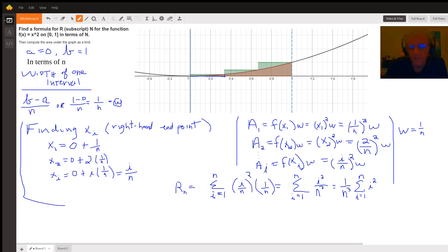Over here we're calculating the area of specific rectangles. To calculate the area of the first rectangle we take f of x sub one, which would be this little distance right here, and multiply it by a width. But the height of that rectangle at x sub one is what you get when you plug x sub one into the function, which is x squared. So x sub one we saw is one over n, one over n squared times w would be a representation for the area of this first rectangle.